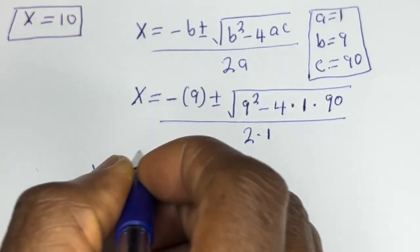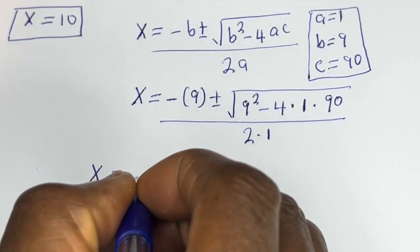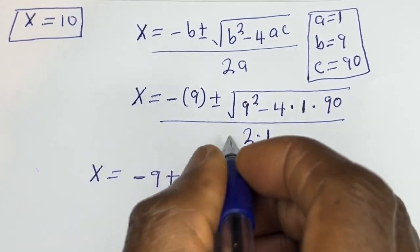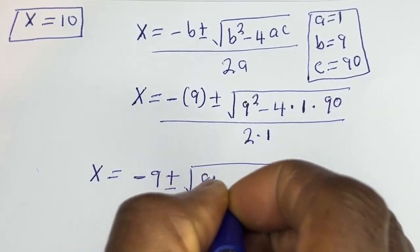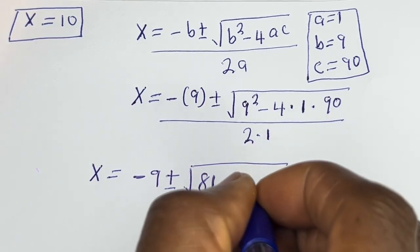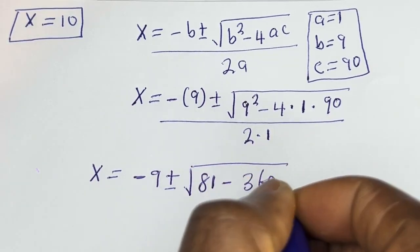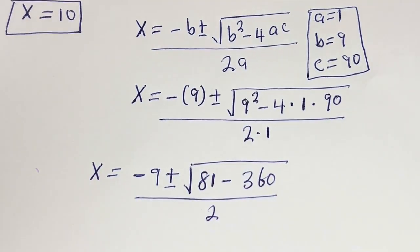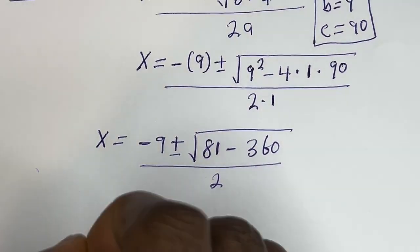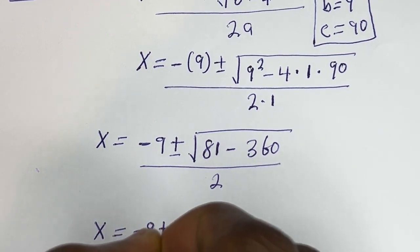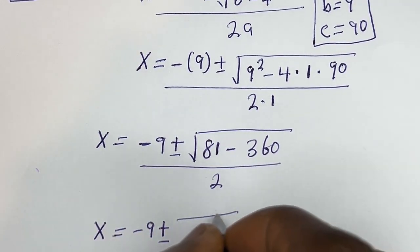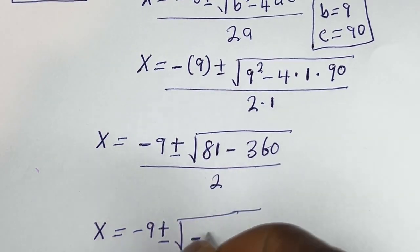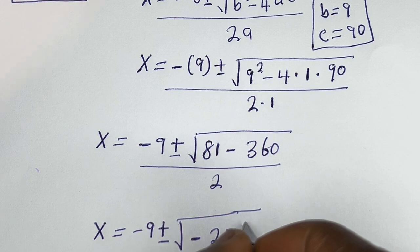Then s equals minus 9 plus or minus square root of 9 squared minus 360, over 2. So s equals minus 9 plus or minus square root of 81 minus 360, that is minus 279, over 2.